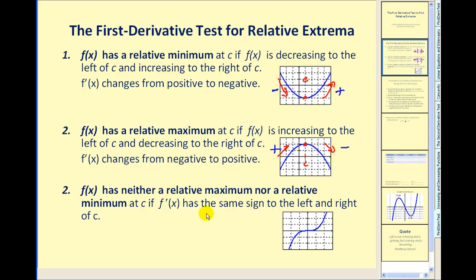And sometimes the sign of the first derivative won't change. If you take a look at this function, it's increasing and then increasing again. So we'd have a positive derivative to the left and right of c, and in this case we have neither a relative max nor a min.